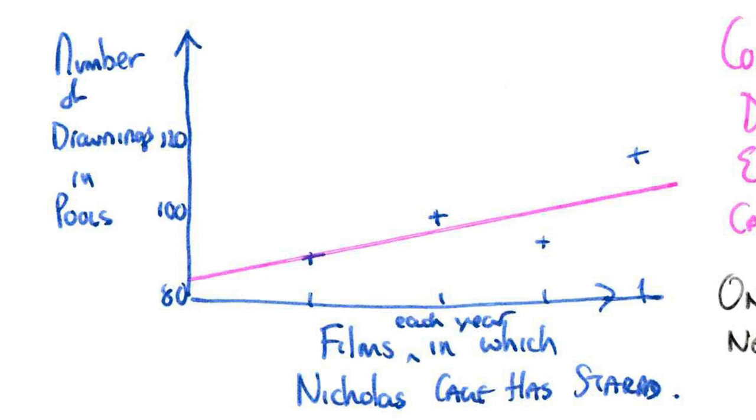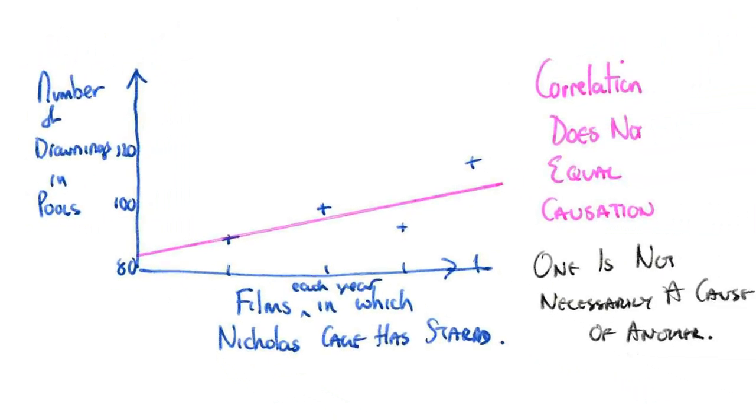But obviously, this is a ridiculous thing to say. You know, stop Nicolas Cage filming films because people are drowning. There is, there's clearly, there's the correlation there, but it doesn't mean that he is responsible for drownings. So what you need to say is that increasing one is not necessarily an increase in another.